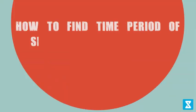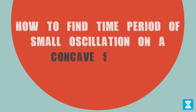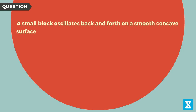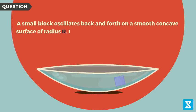How to find time period of small oscillation on a concave surface. A small block oscillates back and forth on a smooth concave surface of radius R as shown in the figure. Find the time period of small oscillation. Solution: